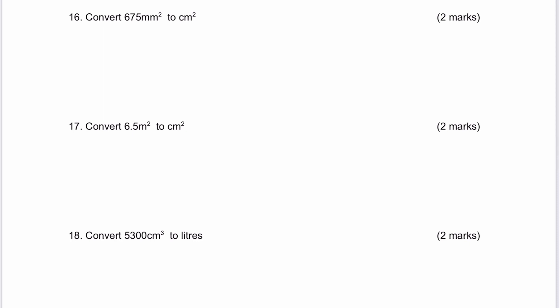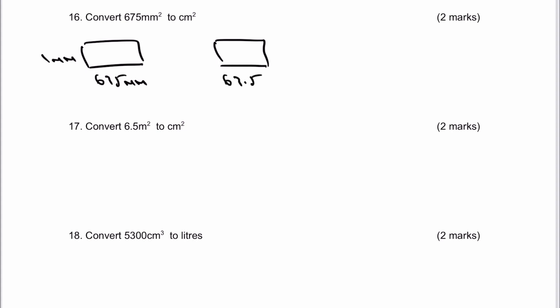Let's have a look at question number 16. 675 millimetres squared — it's basically a rectangle that's 675 millimetres long by 1 millimetre. If you convert it to centimetres, it'll be 67.5 centimetres by 0.1 centimetres. When we multiply those two together, we're going to get 6.75 centimetres squared, and that would be the answer to question number 16.